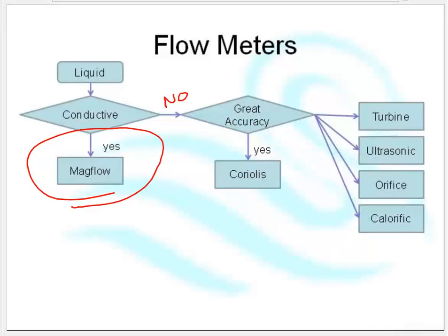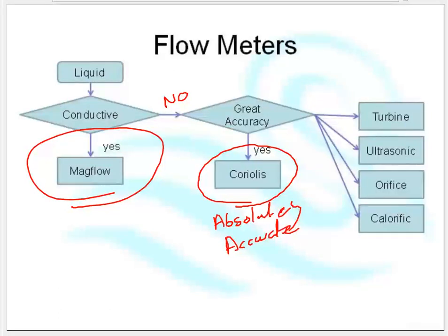If it's not conductive, then do I need tremendous accuracy? In fact, if I need even more accuracy than mag flow, I'm still going to go to Coriolis. If I need very good accuracy, I'm going to go to Coriolis. Coriolis is absolutely accurate. And if I don't need great accuracy and it's non-conductive, then I'm going to look at one of the others: either turbine, ultrasonic, orifice, or calorific. This is my basic decision-making process with liquids.